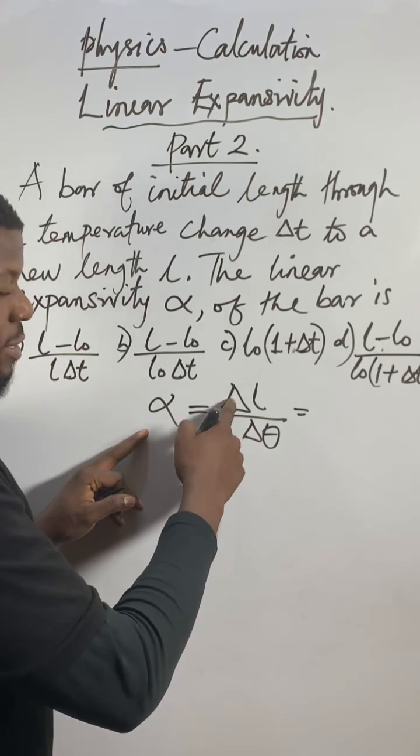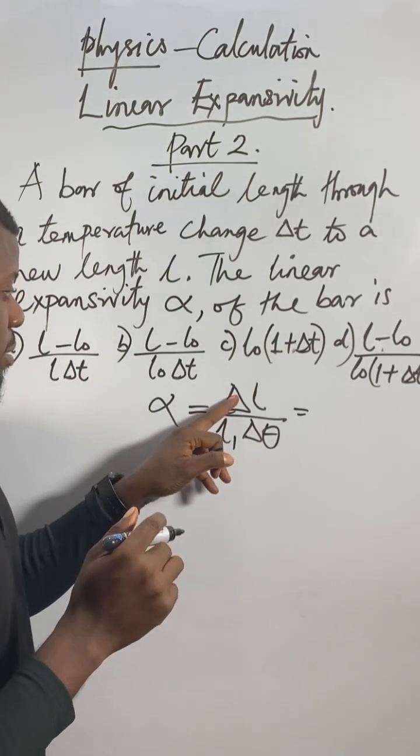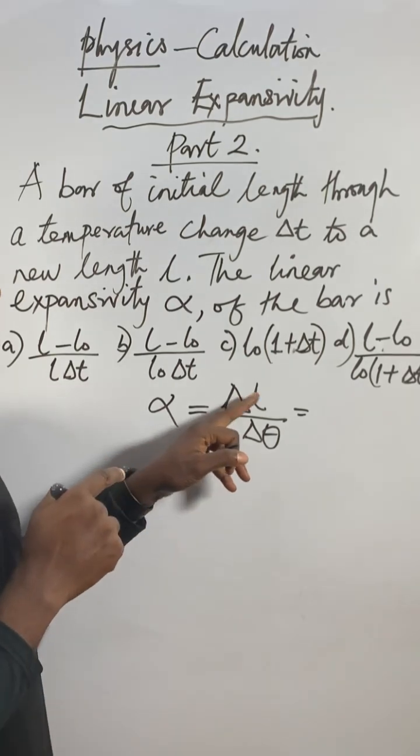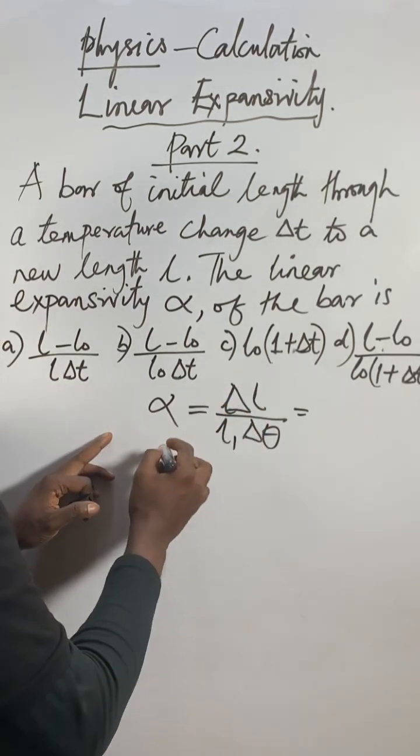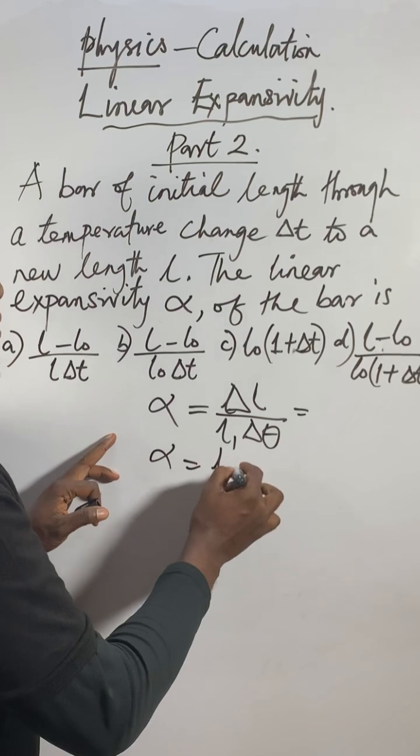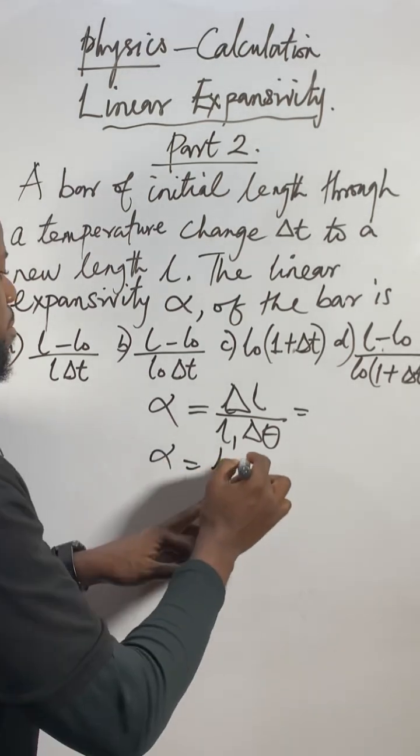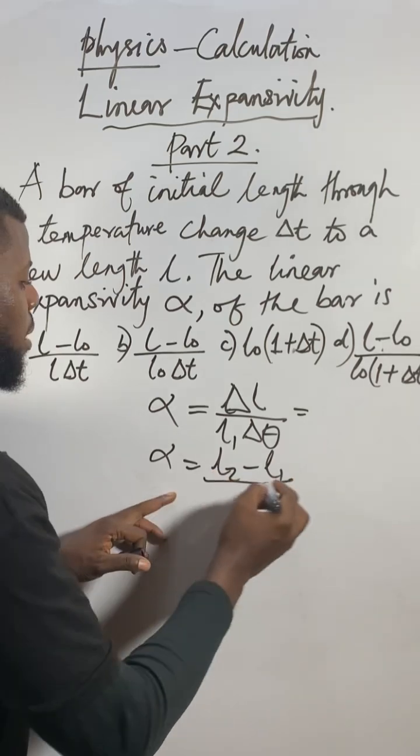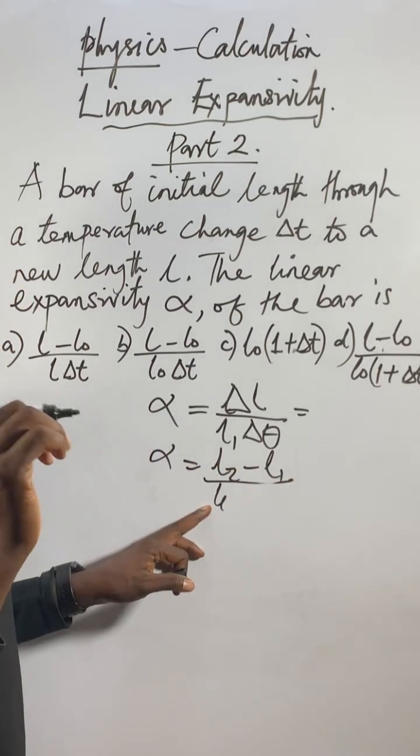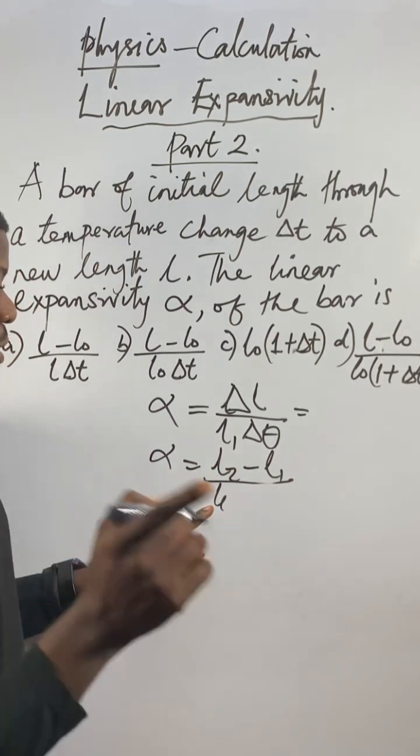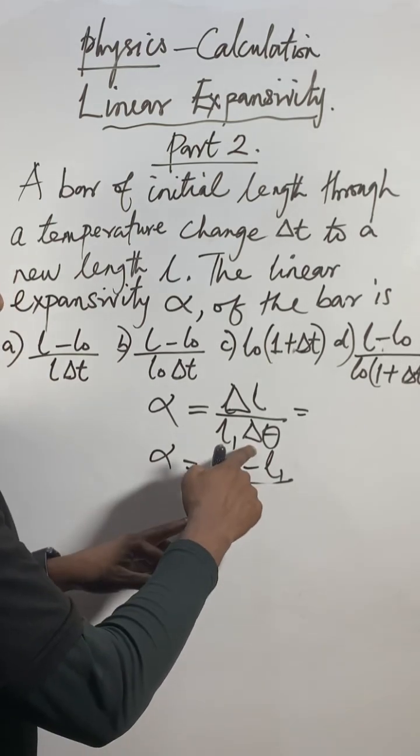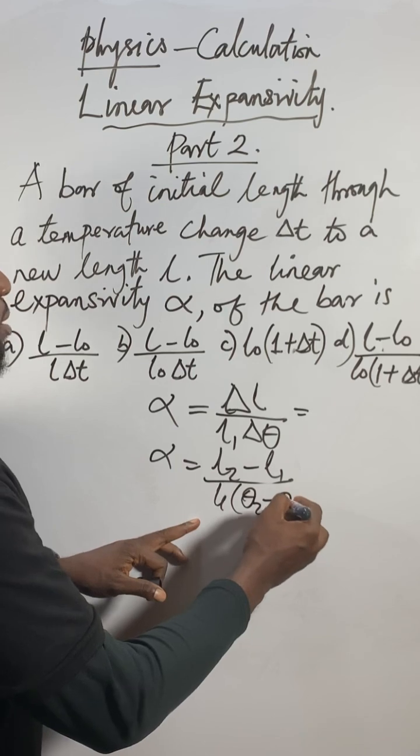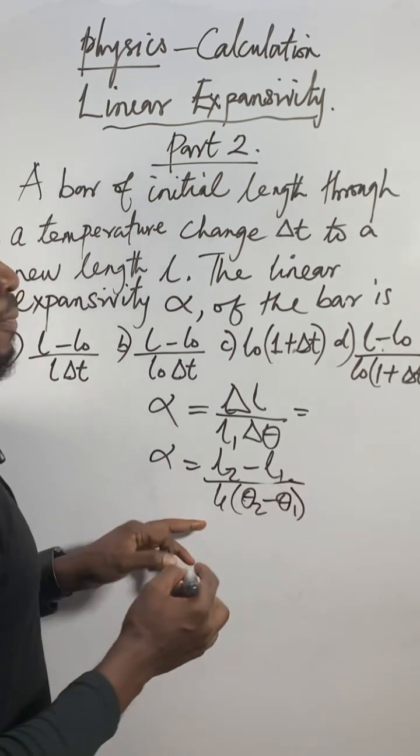Anytime you see this sign delta, it means change. So if you see delta L, it means change in length, meaning I will get the final length L₂ minus initial length L₁, all over L₁, which is the same initial length, times the temperature change delta theta or theta₂ minus theta₁.